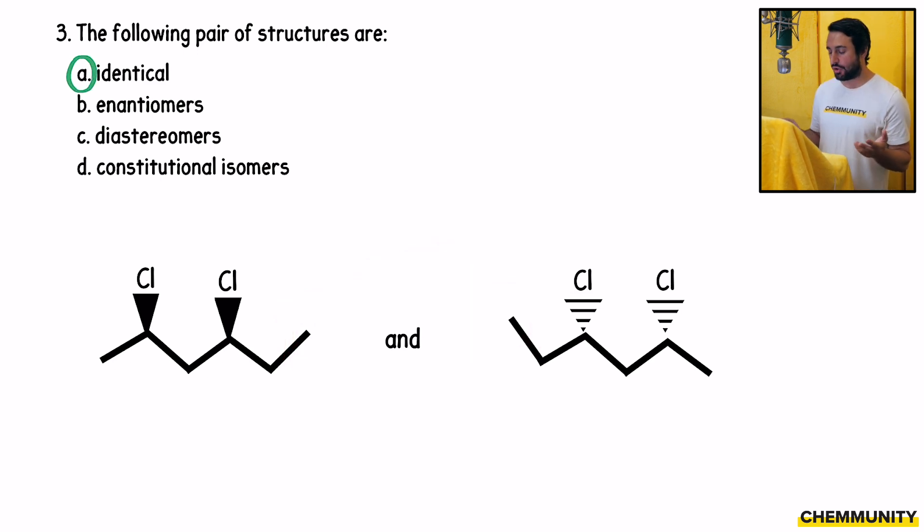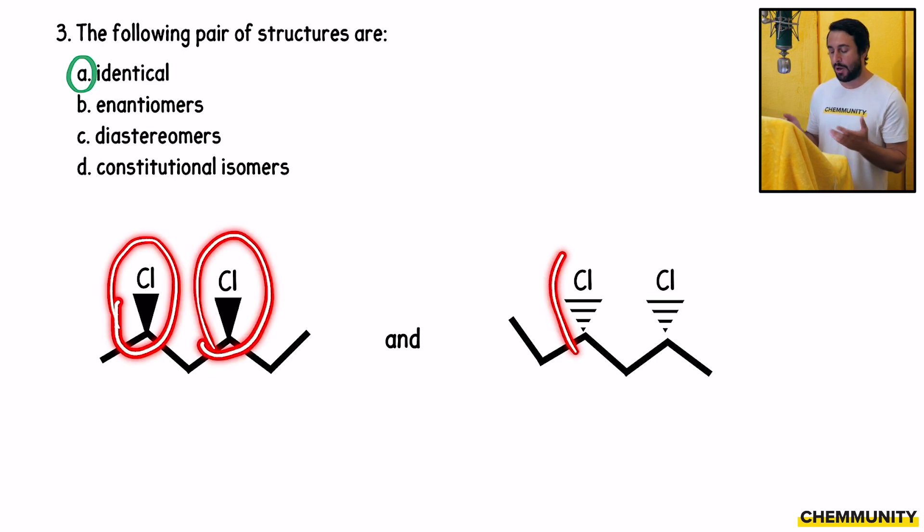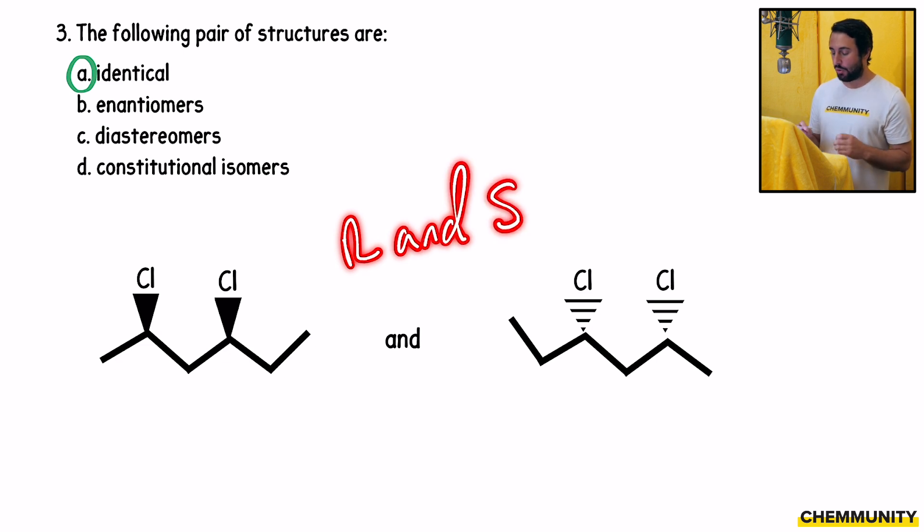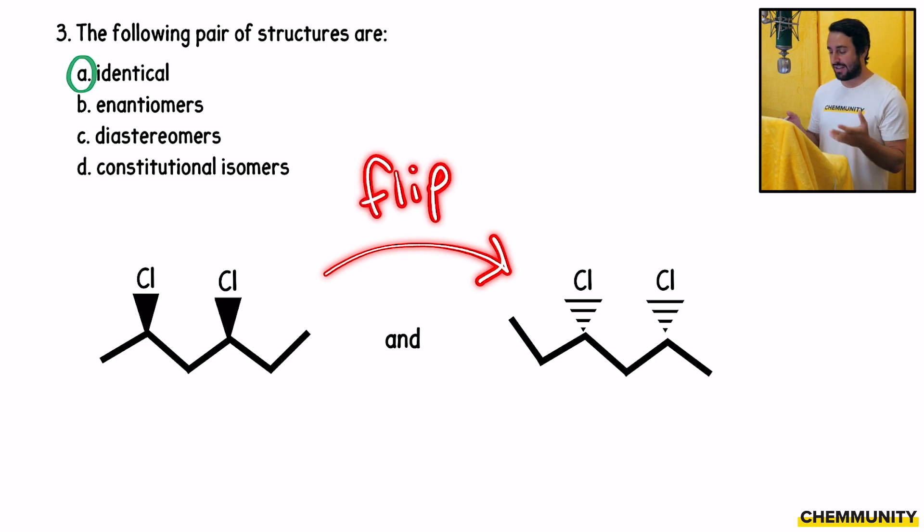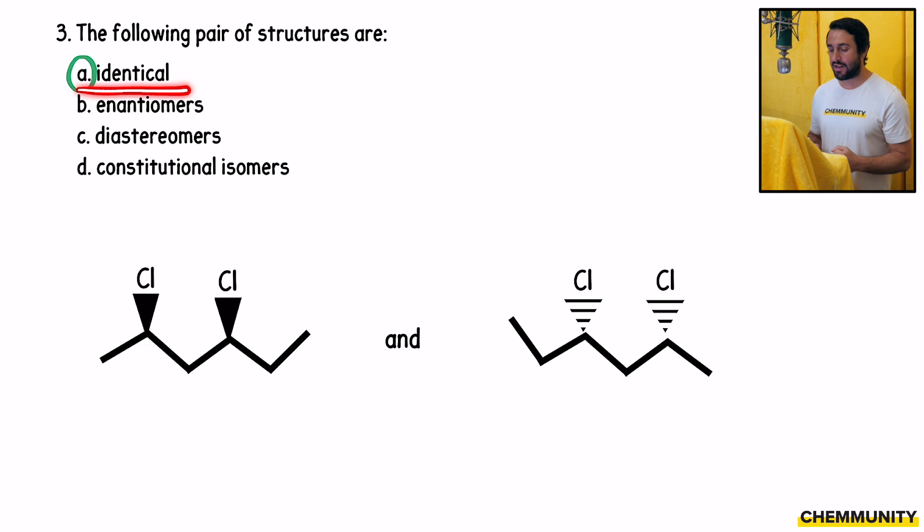The other way you could do it is to just go ahead and assign the absolute configuration by Cahn-Ingold-Prelog convention, and you would see that the R's and the S's match up. So you can assign R and S to every stereocenter, see that they end up the same, and then that's another way that you can see that those are identical. But they are not enantiomers, they're not mirror images, they're not diastereomers, because it is not the case that only one of the stereocenters has changed, and they're not constitutional isomers, the connectivity is the same. The easiest way to do this is to just envision flipping the molecule over onto the other side, seeing that you do get that other structure, and so these are identical.